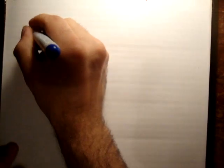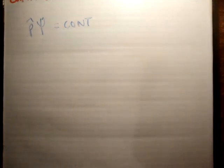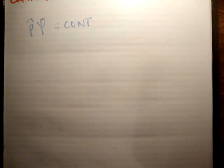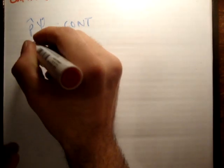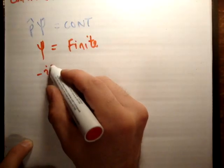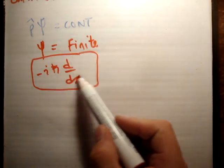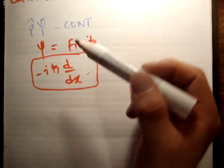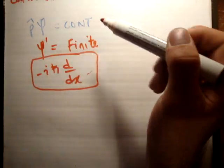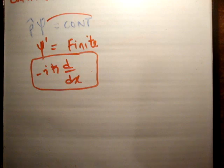Next, if we look at the momentum operator acting on psi, we know from theory that you must have a constant value of momentum — you cannot have an infinite value of momentum. So p-hat operating on psi is equal to a constant, which means that psi prime is finite. The momentum operator is minus i times h-bar d/dx, so it is a differential. In order for the first derivative to be finite, because we need a finite momentum, the actual function itself must be continuous. So psi must be continuous in order for its first derivative to be finite.